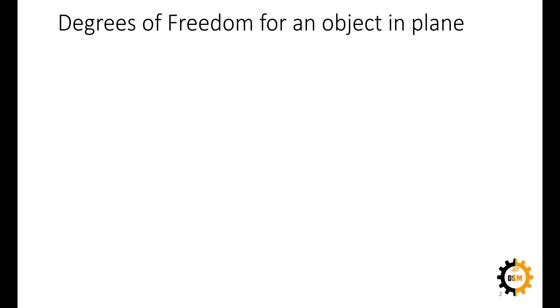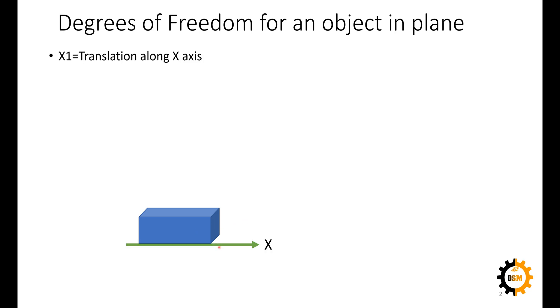Any object moving in a plane has 3 degrees of freedom. We will explain this by considering the screen as a whiteboard. If we have a whiteboard and we are using this blue box as a duster or eraser, this eraser can move in 3 different types of motions. The first motion it can have is translation along the x-axis or horizontal axis. This will be its first degree of freedom.